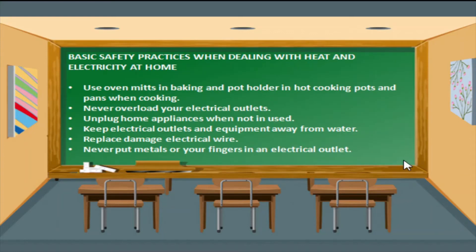We already know the examples of materials that are good conductors of both heat and electricity. Now, let us have the basic safety practices when dealing with heat and electricity at home. Use oven mitts in baking and a pot holder for hot cooking pots and pans when cooking. Never overload your electrical outlets. Unplug home appliances when not in use. Keep electrical outlets and equipment away from water. Replace or repair damaged electrical wire. And for the children, never put metals or your fingers in an electrical outlet.